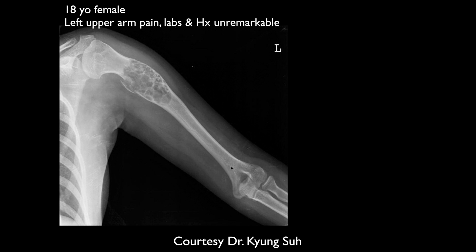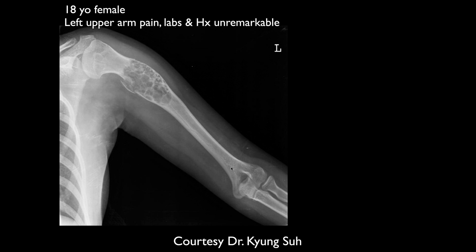John, that's not awfully common, is it? No, this isn't one of the more common osteogenic sarcomas. That's correct. So, 18-year-old female, left upper arm pain. Labs and history unremarkable. She's got this expansile lytic lesion with a bunch of areas of lucency and scalloping with a pathologic fracture in the proximal humeral diaphysis.